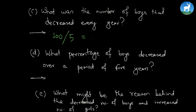So these are the final three questions. The first one is: what was the number of boys that decreased every year? For this we need to find the total number of boys that decreased, which is 100 — that is 100 boys decreased over a period of five years. If you divide 100 by 5, what we have is 20. So 20 boys left school every year.